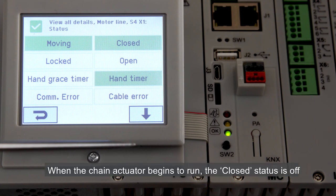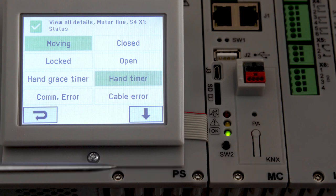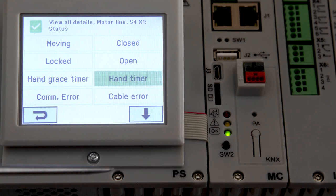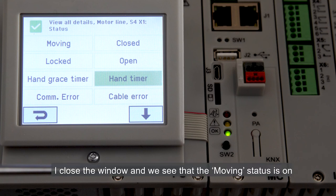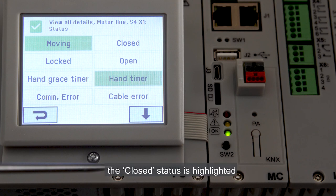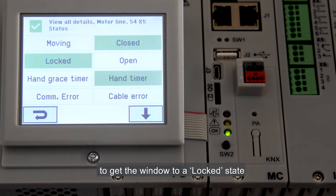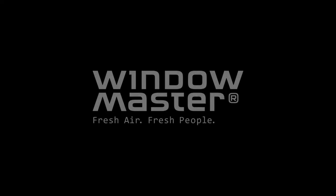When the chain actuator begins to run, the closed status is off. If I press stop, the window is not moving anymore. I close the window and we see that the moving status is on because the window is running towards closing. When it reaches closing, the closed status is highlighted, meaning that the window is closed but not yet locked. The locking actuator is running to get the window to a locked state.